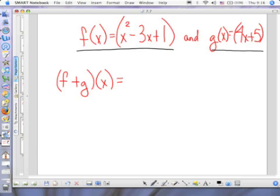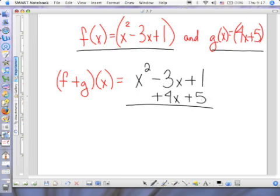If I ask you to add these two functions together, I am simply saying take what F of X is equal to and add it to what G of X is equal to. We're going to actually put like terms underneath each other. So if you're adding 4X plus 5, we'll line up our like terms.